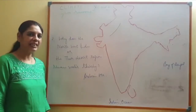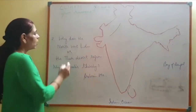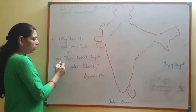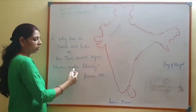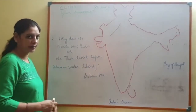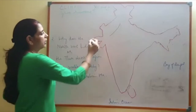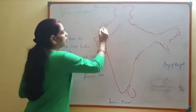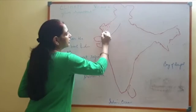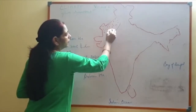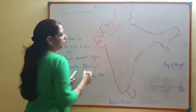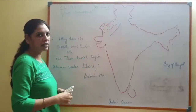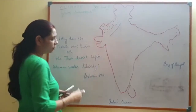The next question is: why does Northwest India or the Thar Desert region remain water thirsty — that means dry? This is our Northwest India and this is the Thar Desert region. The question is why this portion of our country remains dry.